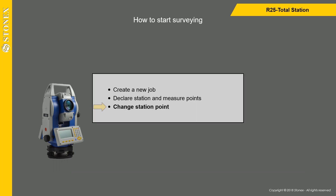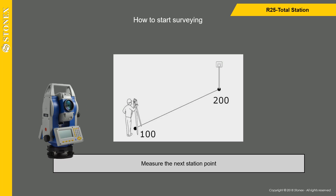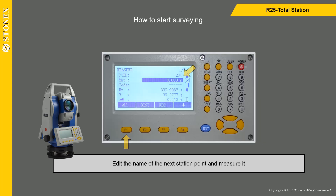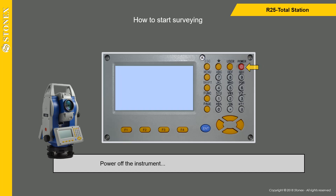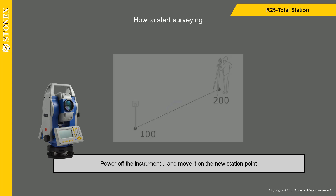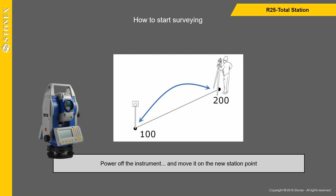To change the station point, measure the next station point. Edit the name of the next station point and measure it. Power off the instrument and move it to the new station point.